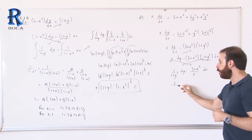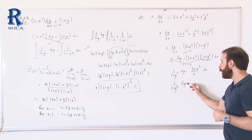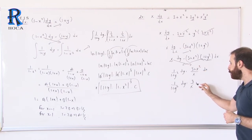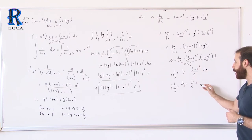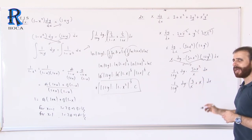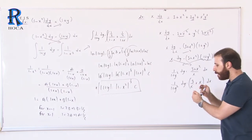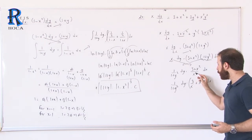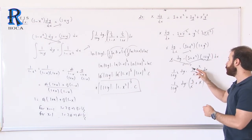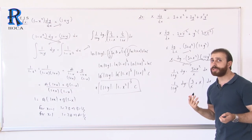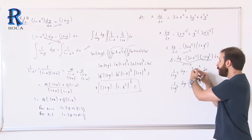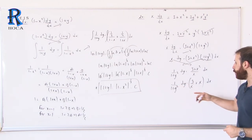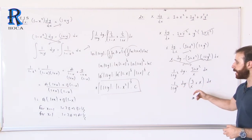We can split the right-hand side: (3 plus x squared) over x equals 3 over x plus x squared over x, which simplifies to 3 over x plus x. Be careful — a common mistake is to incorrectly factor 3 plus x out as a single term. You must separate the fraction into two parts: 3/x plus x.